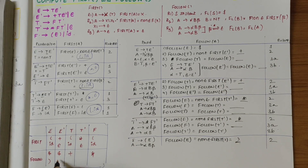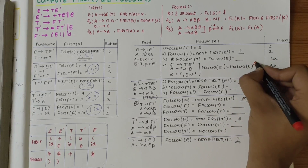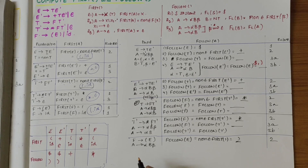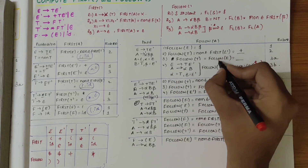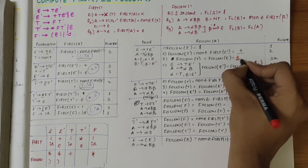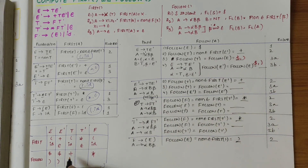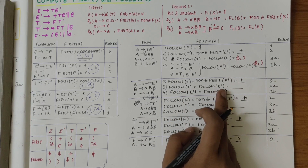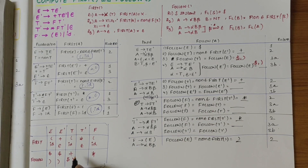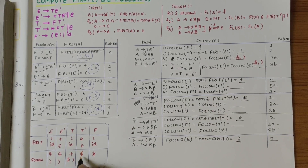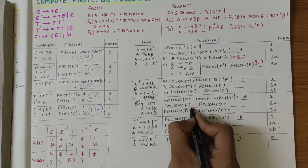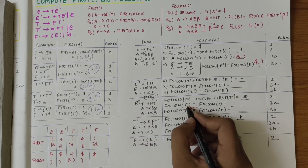Follow of E has '$' and ')', so follow of E' is also '$' and ')'. Follow of T is also equal to follow of E, that is '$' and ')'. So follow of T is '+', '$', and ')'. Follow of T' equals follow of T, which is '+', '$', and ')'. Follow of F equals follow of T, so follow of F is '*', '+', '$', and ')'.